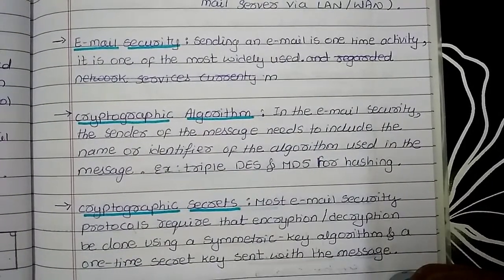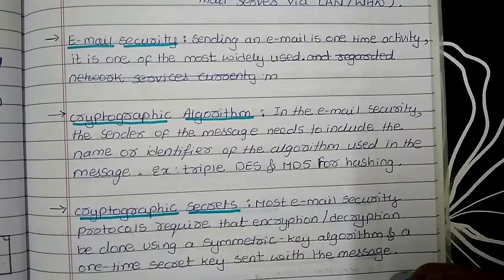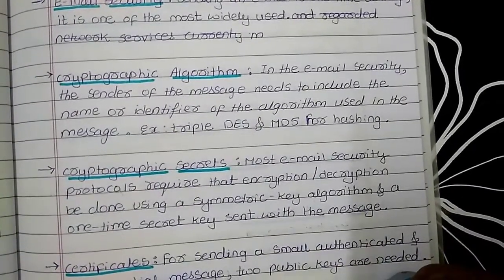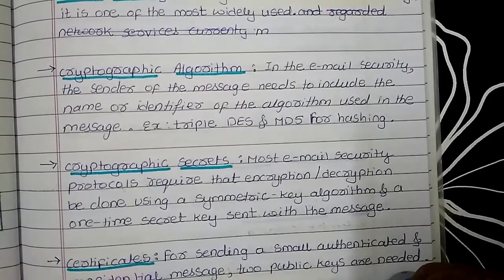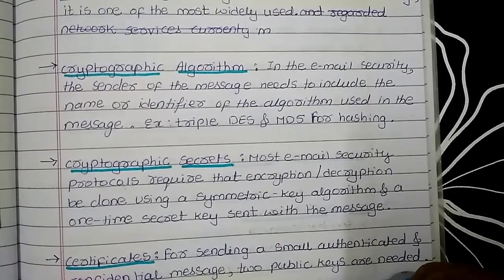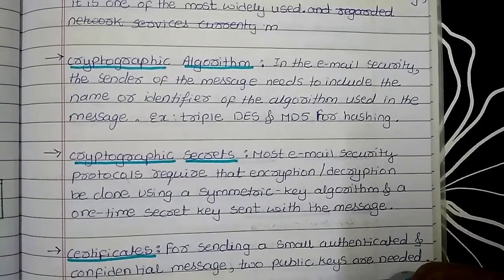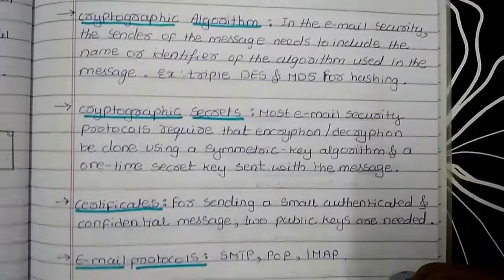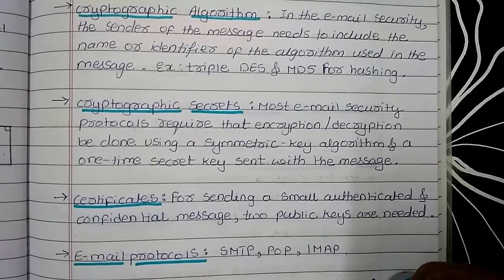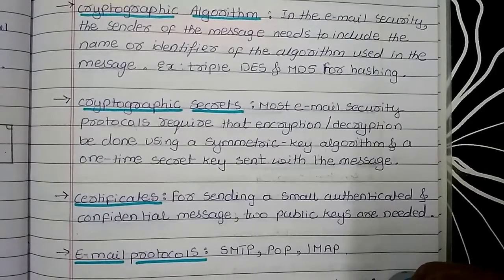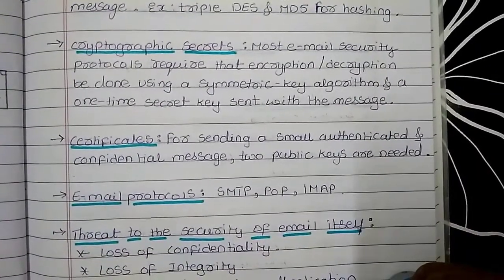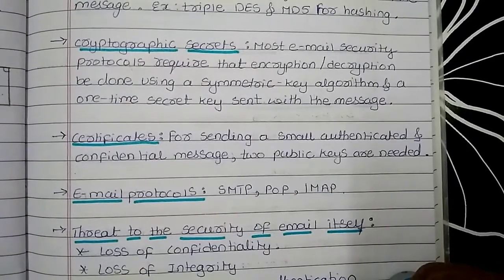Next is email security. In the cryptographic algorithm for email security, the sender needs to include the name or identity of the algorithm being used to send the message. We can use cryptographic algorithms like Triple DES or MD5 for hashing. Most email security protocols require encryption or decryption using a symmetric key algorithm with a one-time secret key sent with the message. Certificates are also needed for sending authenticated and confidential messages using public keys.